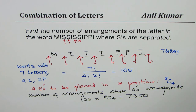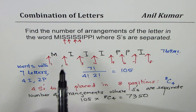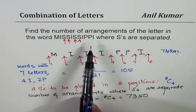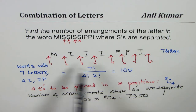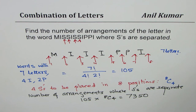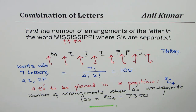So there are 7,350 arrangements which you can make with the word Mississippi where S's are all separate. That is how such questions can be answered. I hope that helps. This is Anil Kumar — you can always share and subscribe to my videos. Feel free to post questions. Thank you, and all the best.